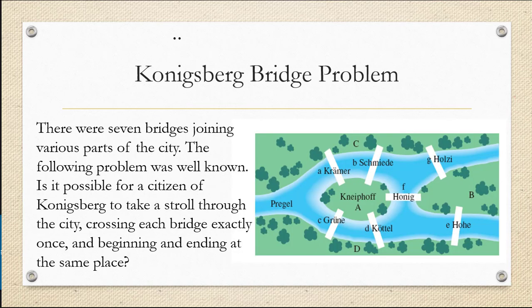In the last video, we talked about the Konigsberg bridge problem, where there were seven bridges joining various parts of the city. The question was asked: is it possible for a citizen of Konigsberg to take a stroll through the city, crossing each bridge exactly once, and beginning and ending at the same place?